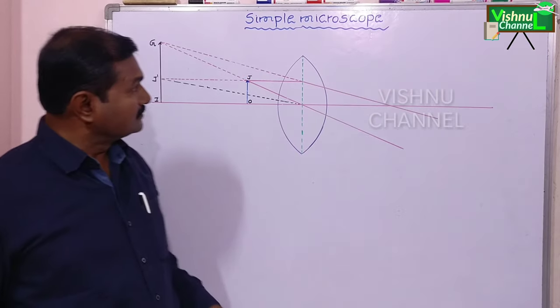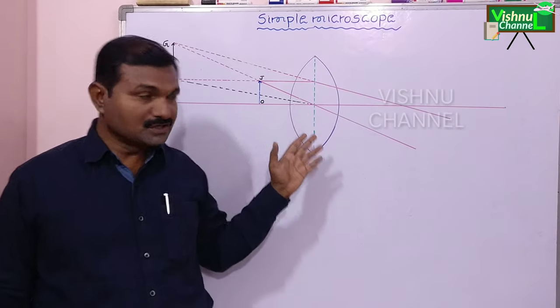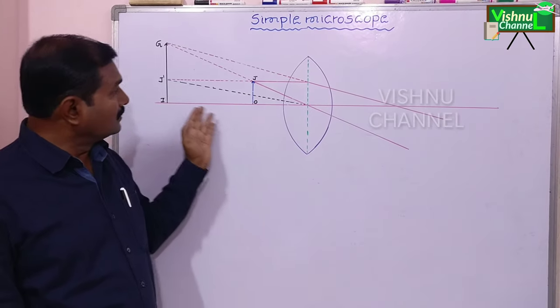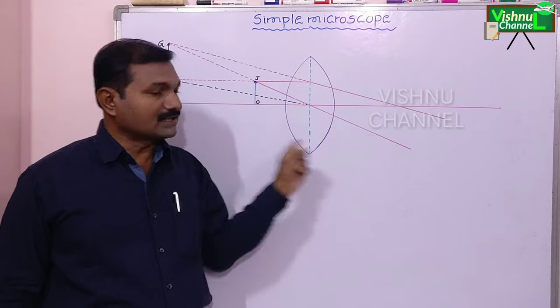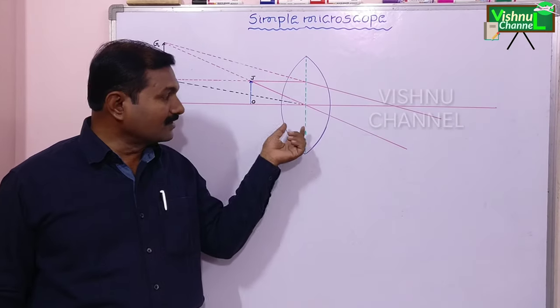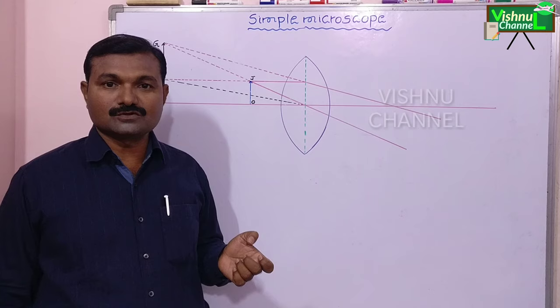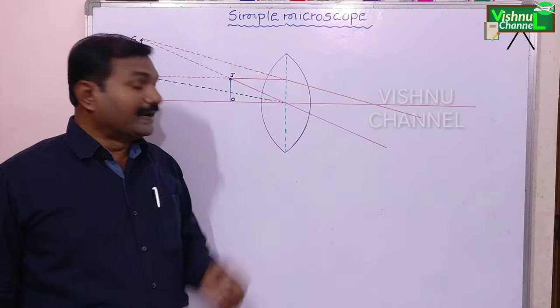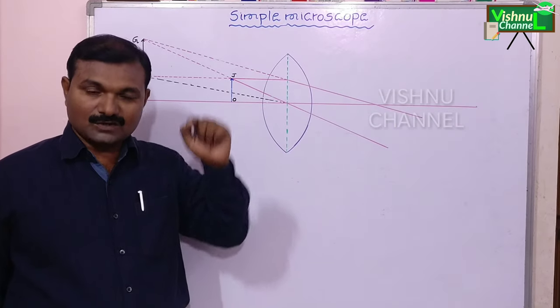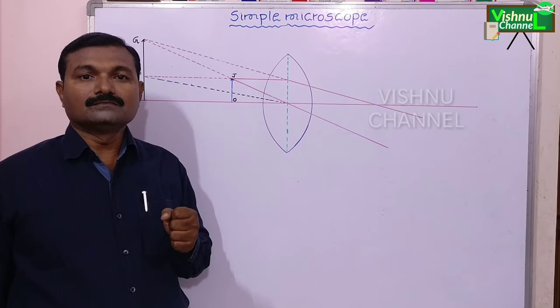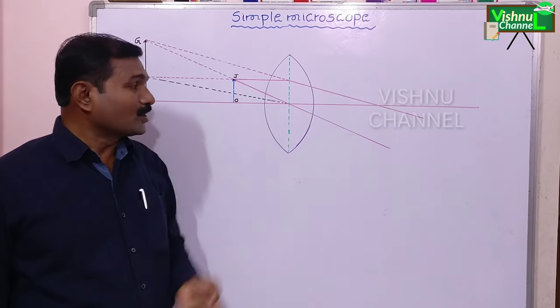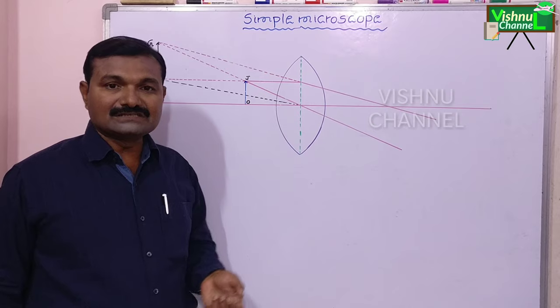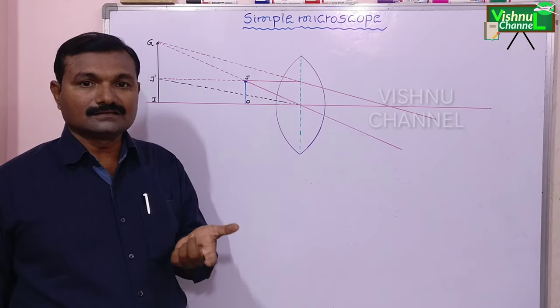Hello students. In this session we are going to learn about simple microscope. This is the biconvex lens. The biconvex lens is used as simple microscope. Simple microscope means nothing but a biconvex lens is fixed in a circular metal frame providing with a handle. It is also called magnifying lens or convex lens or reading lens.